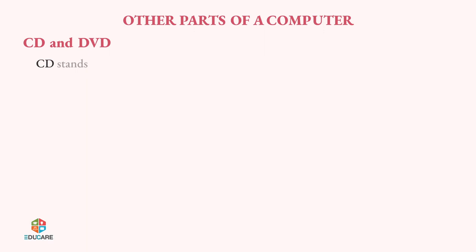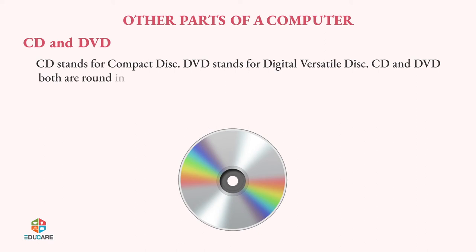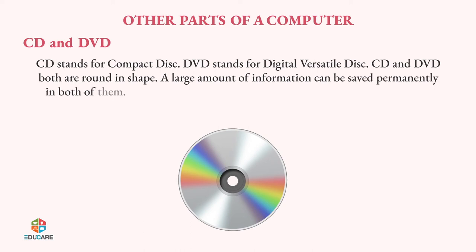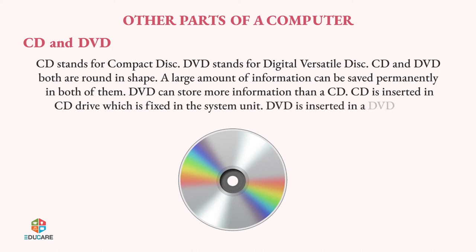CD and DVD. CD stands for Compact Disc. DVD stands for Digital Versatile Disc. CD and DVD both are round in shape. A large amount of information can be saved permanently in both of them. DVD can store more information than a CD. CD is inserted in a CD drive which is fixed in the system unit. DVD is inserted in a DVD drive.